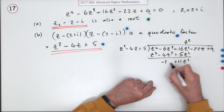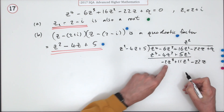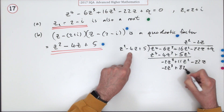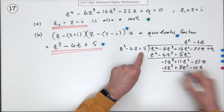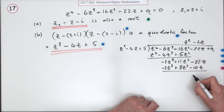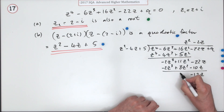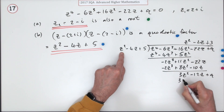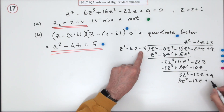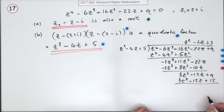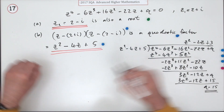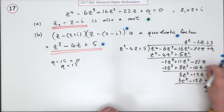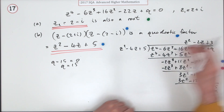Carrying out the division: z⁴ requires multiplying by z², giving z⁴−4z³+5z². Subtracting leaves −2z³+11z². Bringing down: −2z³ requires multiplying by −2z, giving +8z²−10z. Subtracting gives 3z²−12z. With 3z², multiply by +3 giving 3z²−12z+15. Subtracting leaves q−15, and since it's a factor, q−15=0, so q=15.